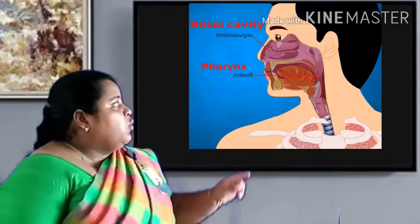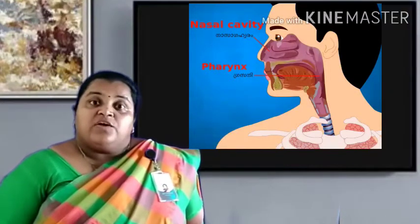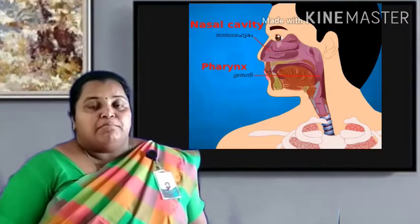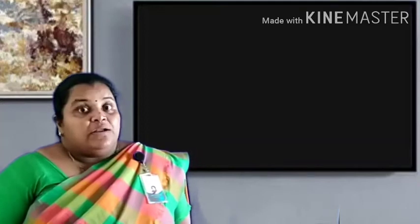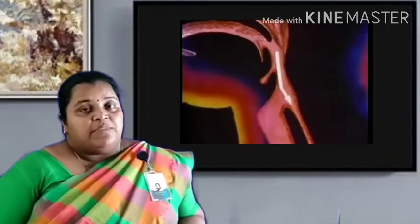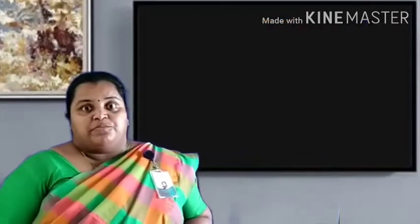The nasal cavity opens into the pharynx. It is a common place where both the digestive system and respiratory system meet each other. In the second chapter we already learnt about the epiglottis. Epiglottis closes the respiratory system when food enters into the esophagus. But during respiration, epiglottis closes the esophagus and air moves into the respiratory tract.